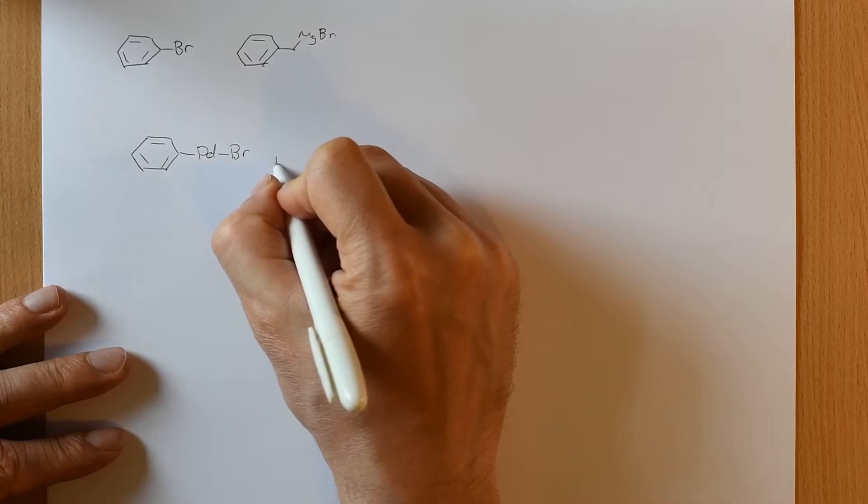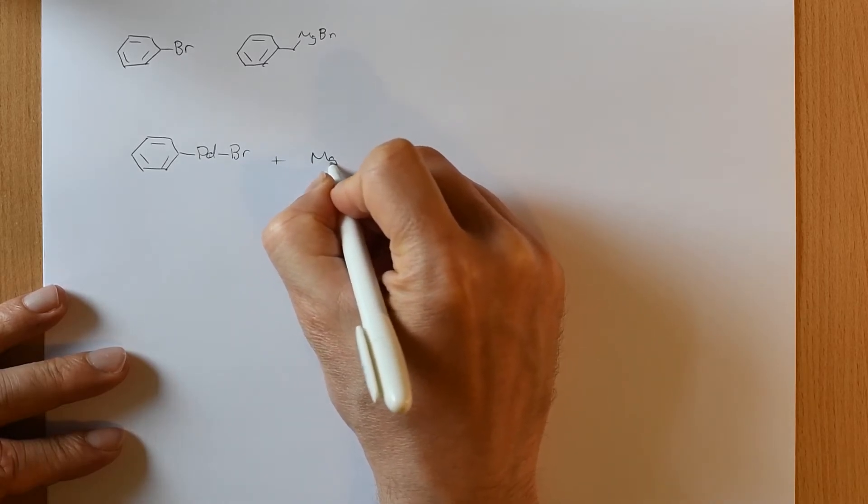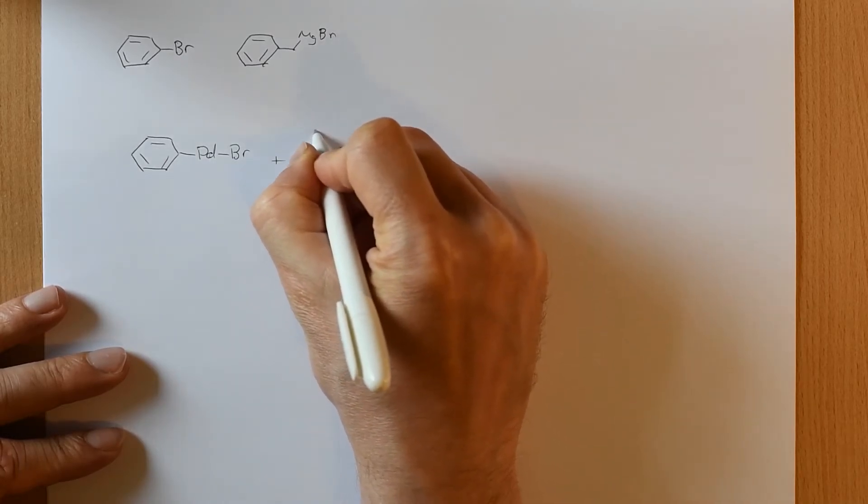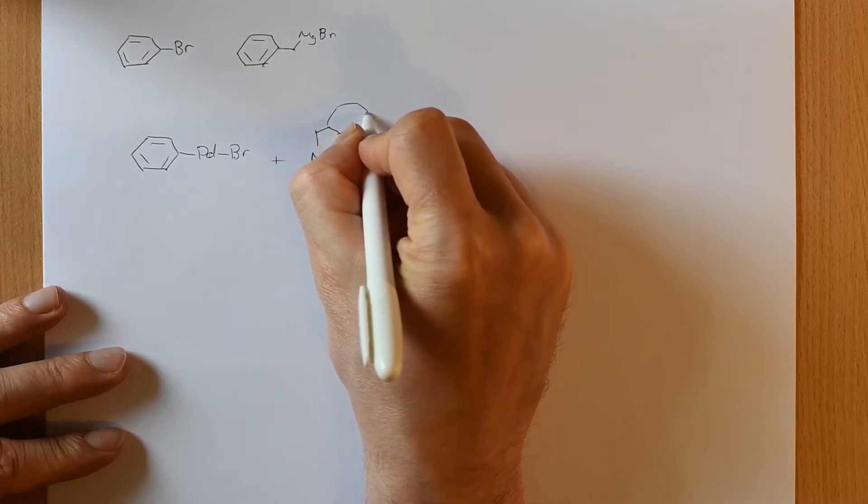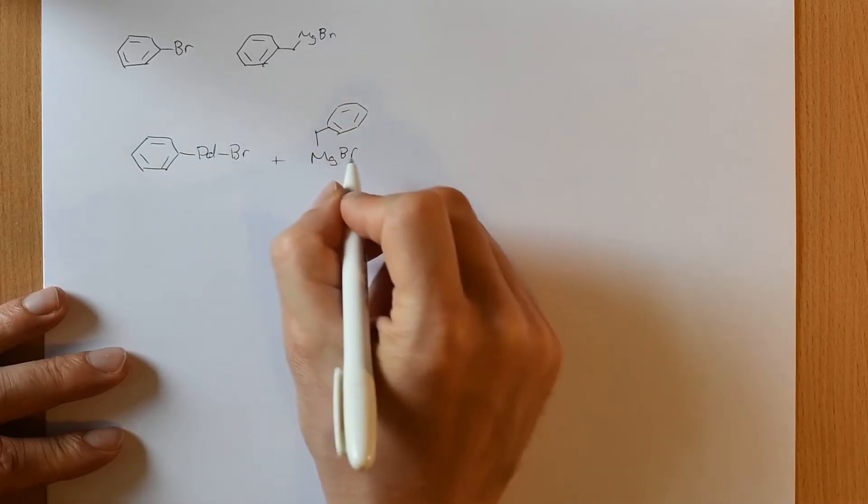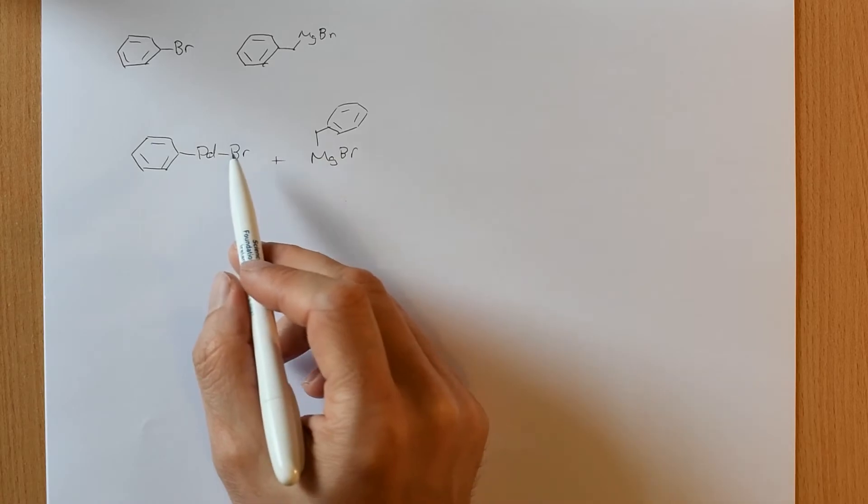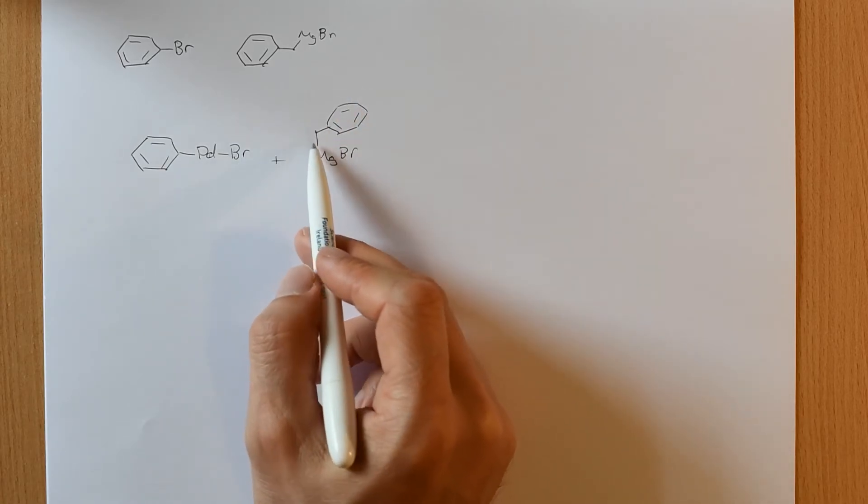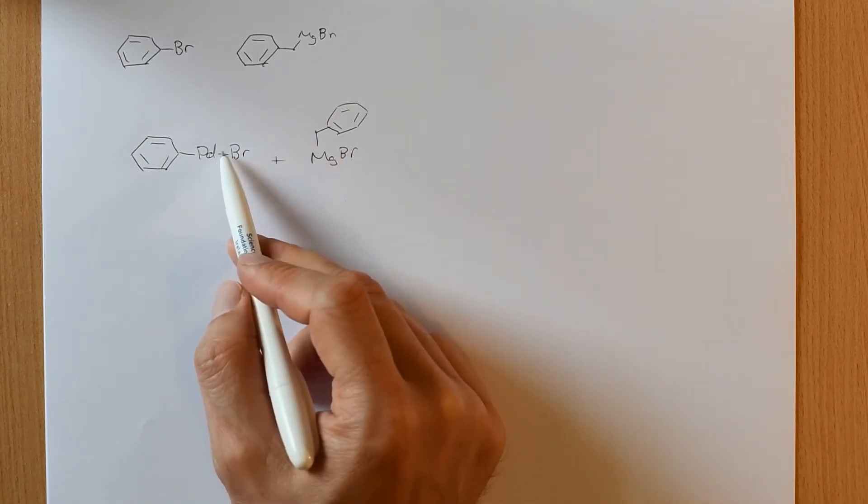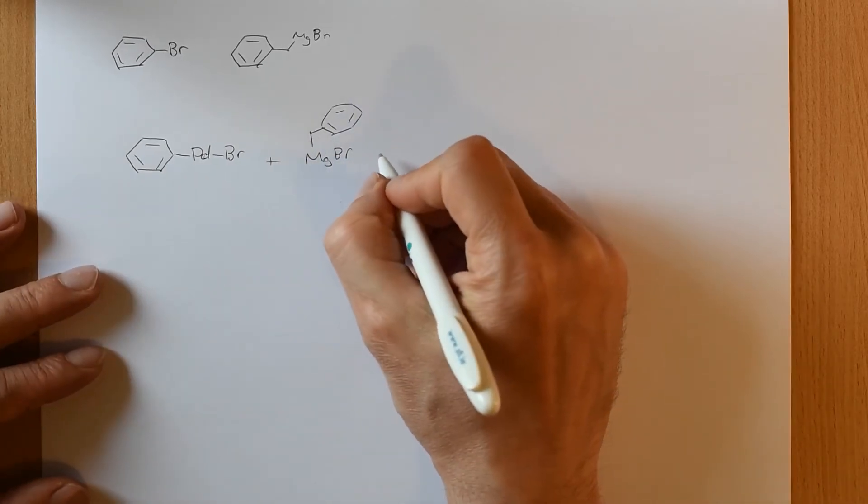And we have a palladium coordinated to a bromine and a benzene ring. In the reaction, it's going to interact with the benzyl-magnesium-bromide. And it's going to do transmetallation, which means the magnesium and the palladium are going to swap ligands. The bromide is going to go with the magnesium, and the benzyl group is going to go with the palladium.